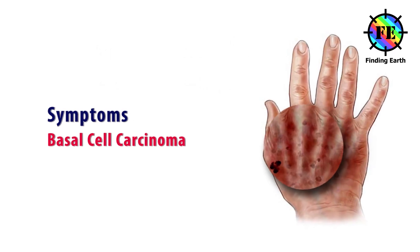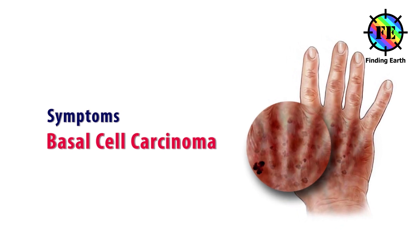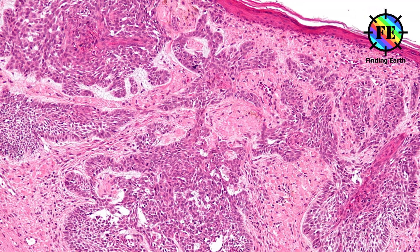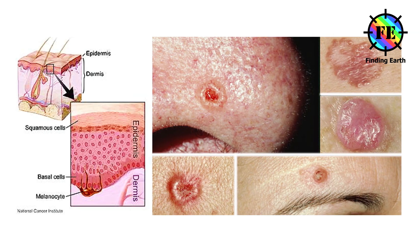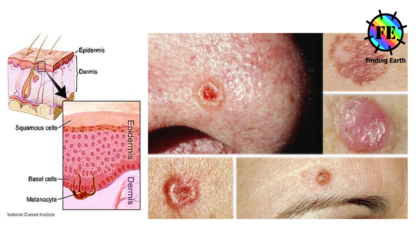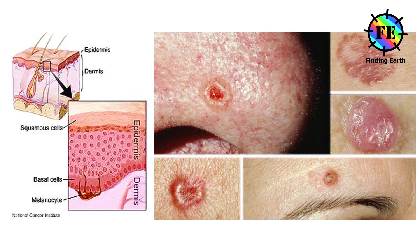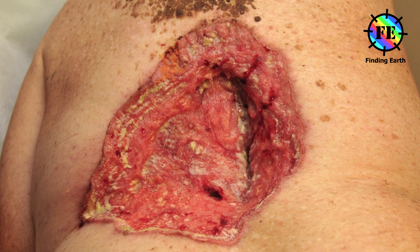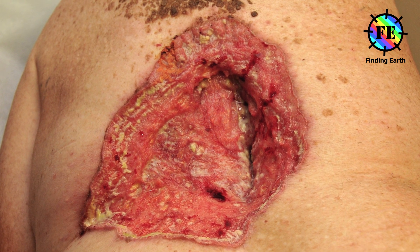Basal cell carcinoma. BCC usually appears as a small red or pink lump, although it can be pearly white or waxy looking. It can also look like a red scaly patch. The lump slowly grows and may become crusty, bleed, or develop into a painless ulcer.